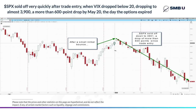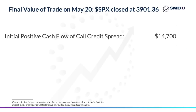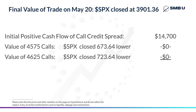Now valuing our trade is easy because we start with the cash flow we first received for selling the call credit spread. It's obvious that both the 4575 and 4625 calls expired worthless because both are literally hundreds of points above the final price of SPX on expiration day. So they don't pay off anything and just expire with no value, leaving the trade with all of the cash flow originally received — that $14,700. The indicator was correct, and the VIX falling below 20 did indeed mark the beginning of a downtrend in the market.